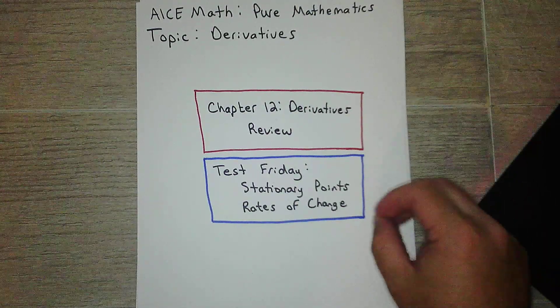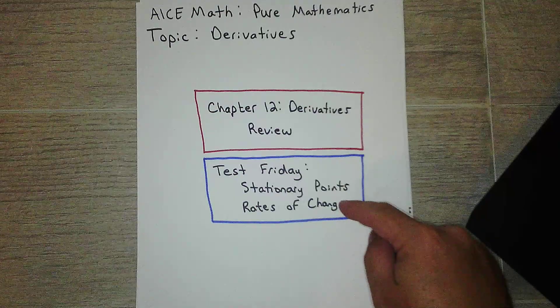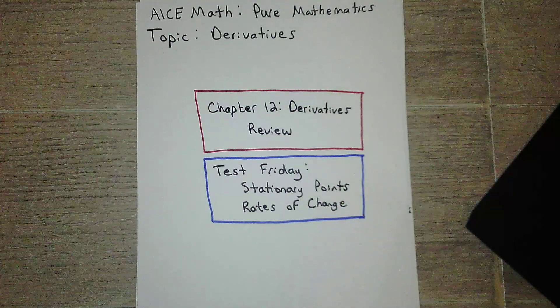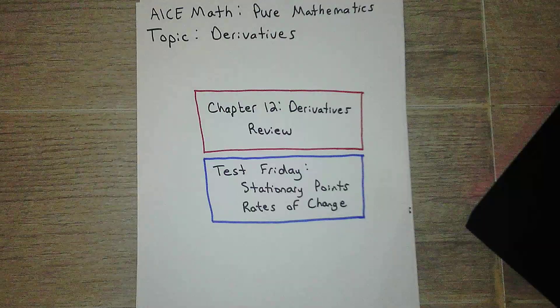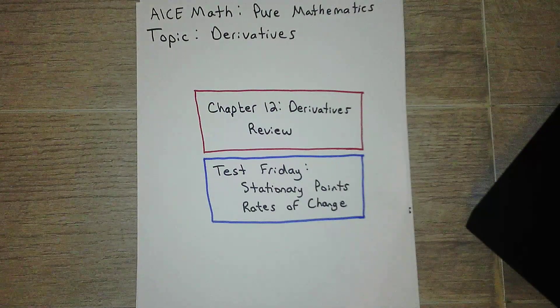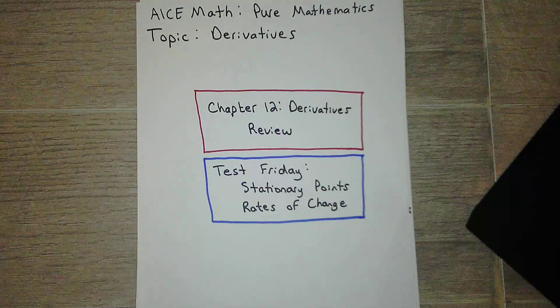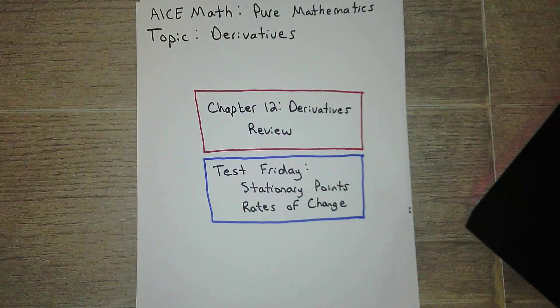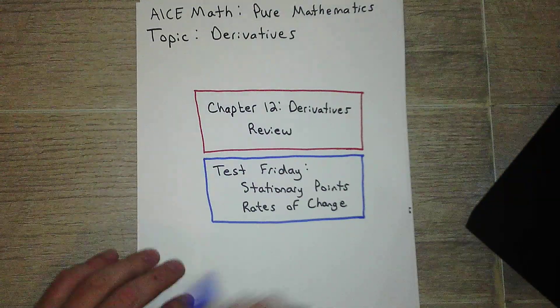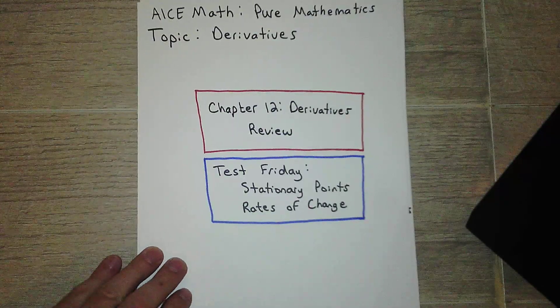It will be four questions: two stationary points and two rates of change. We've been reviewing this week. We've done two stationary points, one on Monday and one on Tuesday. We did a rate of change yesterday, and we're going to do a rate of change today, or at least a question that involves rate of change.